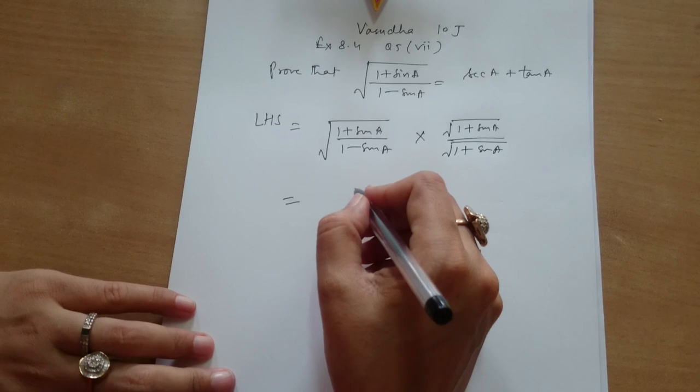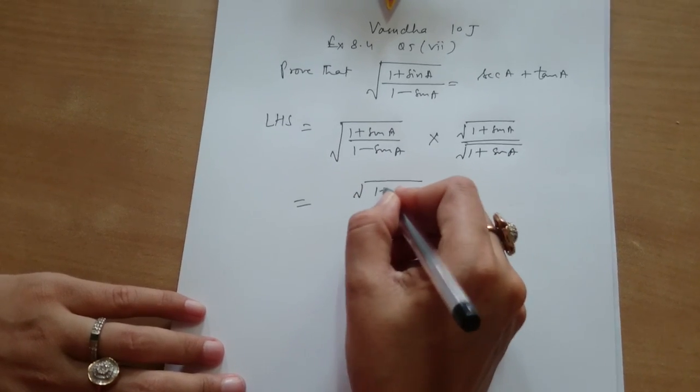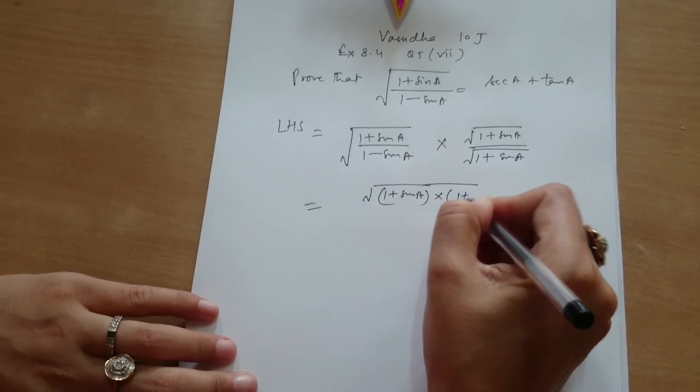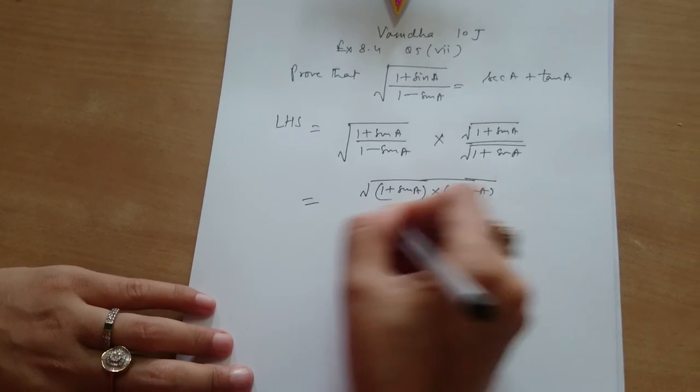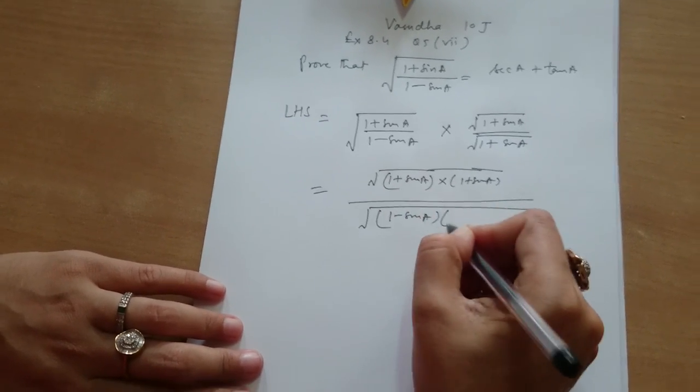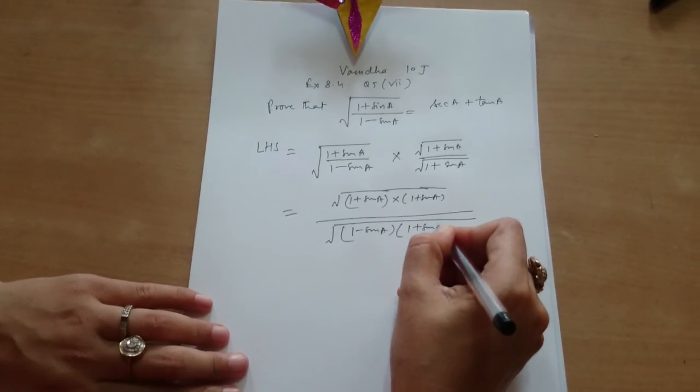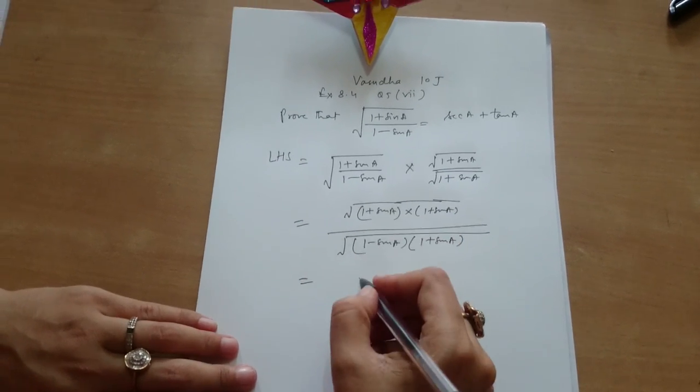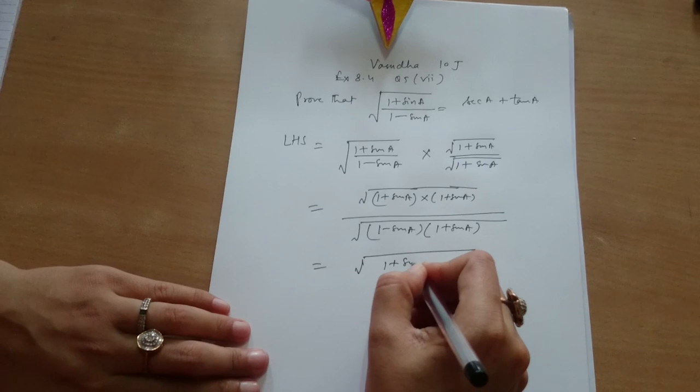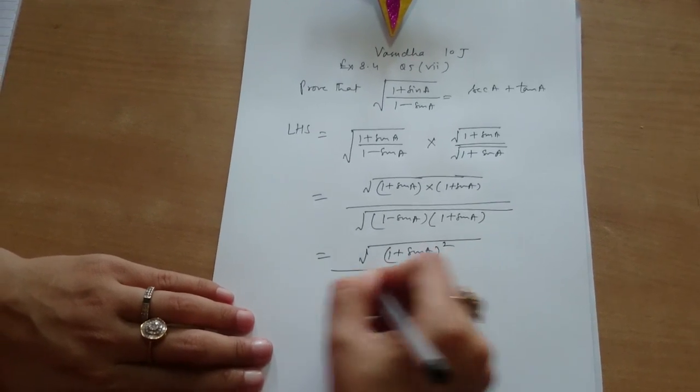In the numerator I will have under root of 1 plus sin A into 1 plus sin A. Yes ma'am. And in the denominator I will have under root of 1 minus sin A into 1 plus sin A. Ma'am now we have under root of 1 plus sin A whole square upon cos A whole square. Right.